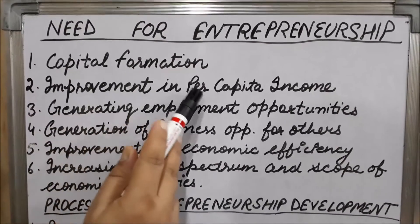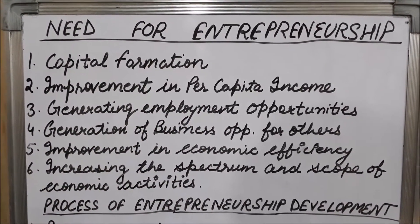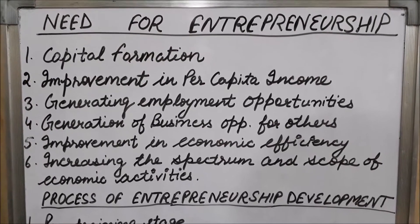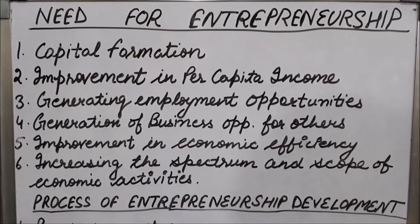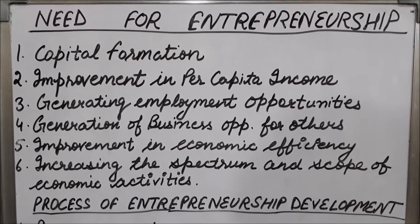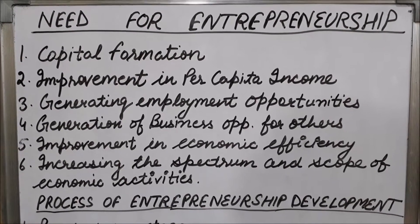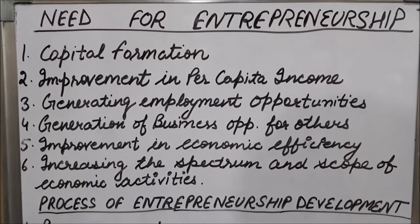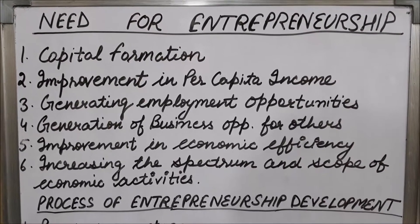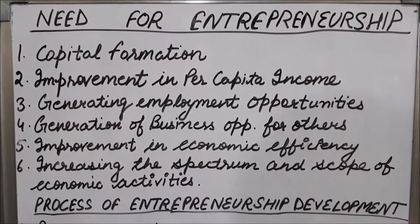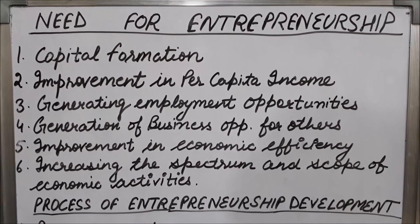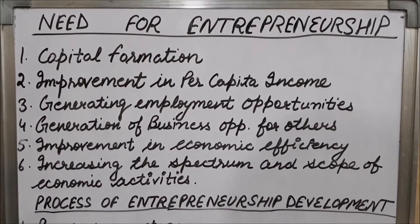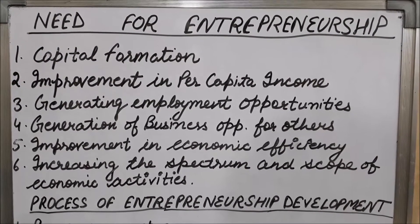The second need is improvement in per capita income. As savings of people get invested in companies through securities — companies or industries issue shares, people purchase such shares, and their money gets invested in the companies. That money is capital for the company and is used for production activities. As production increases, GDP also increases. With the increase in gross domestic product, national income increases, and as national income increases, it leads to increase in per capita income of the people.